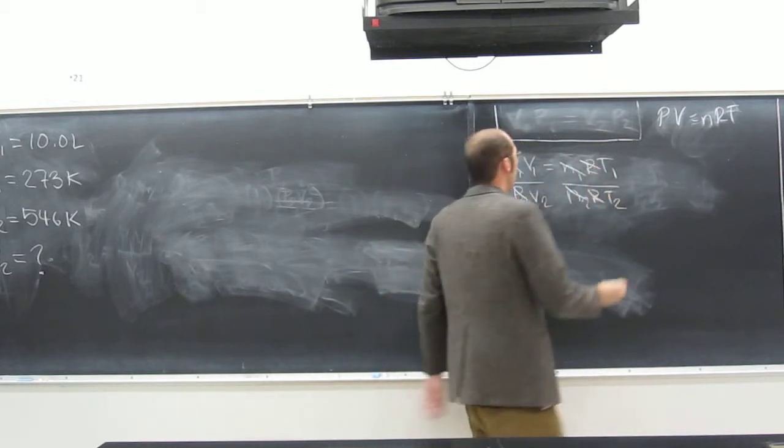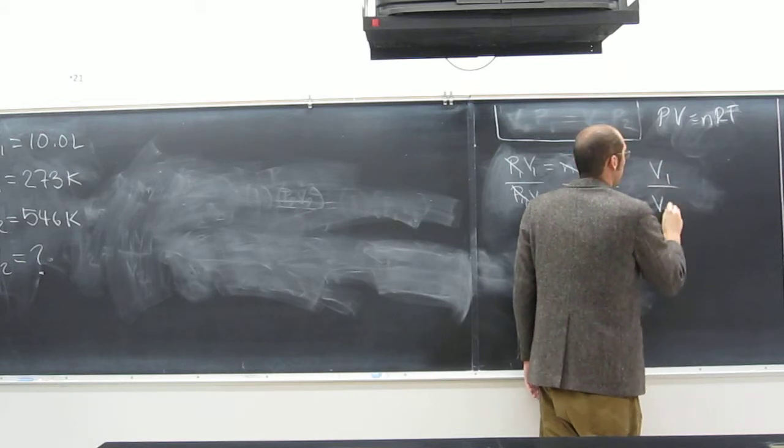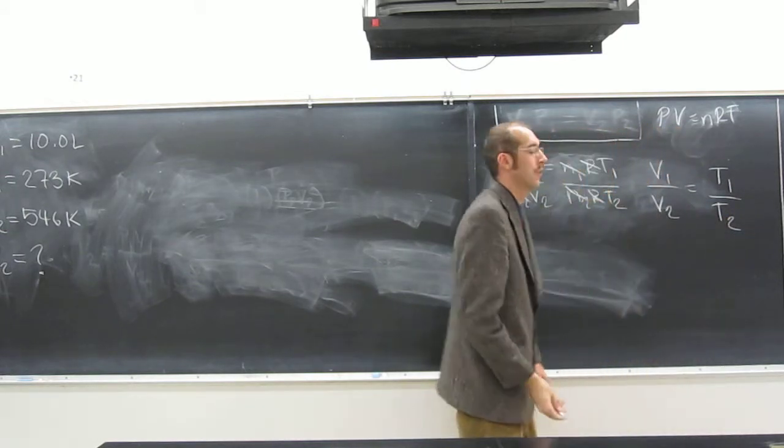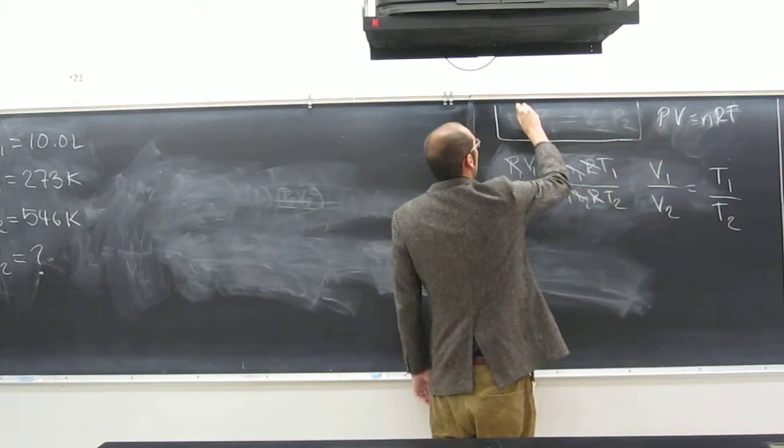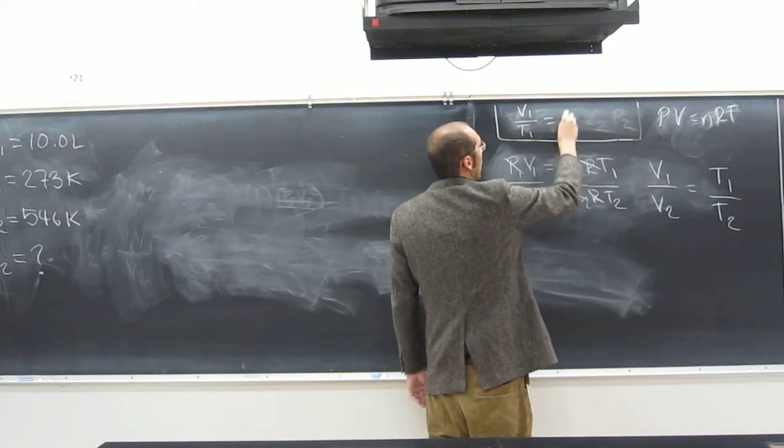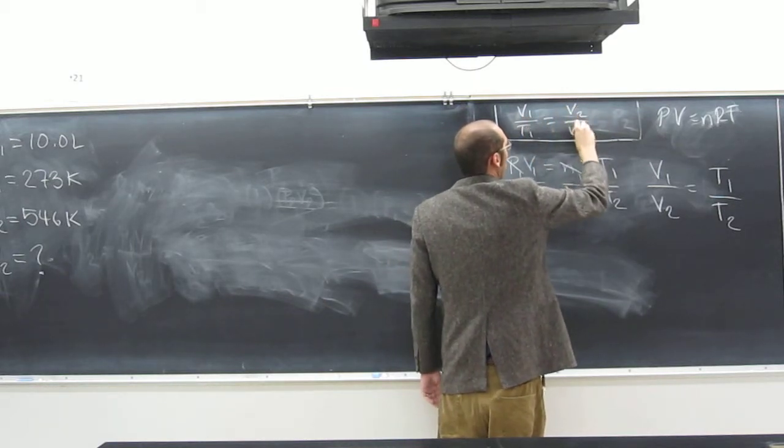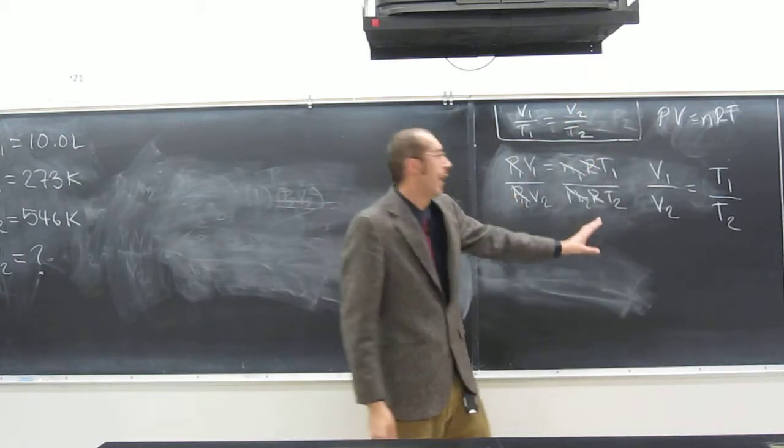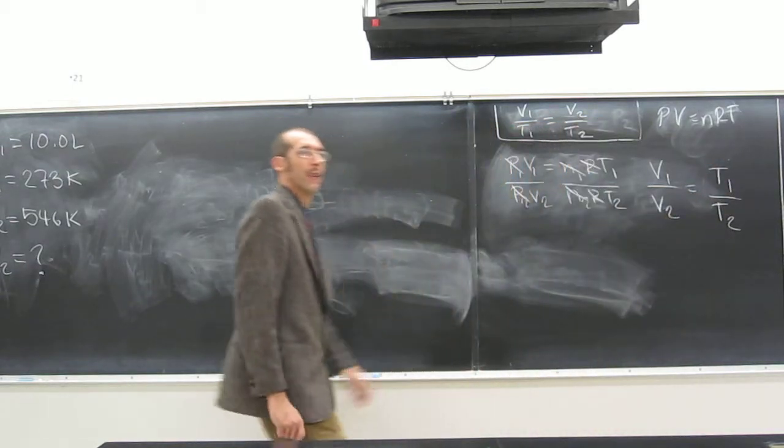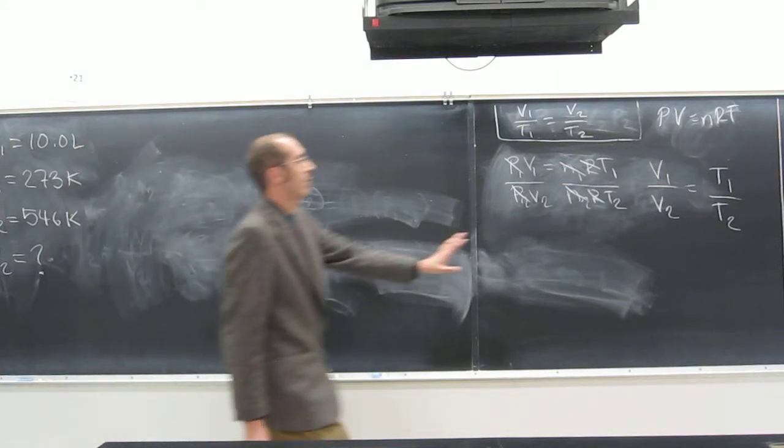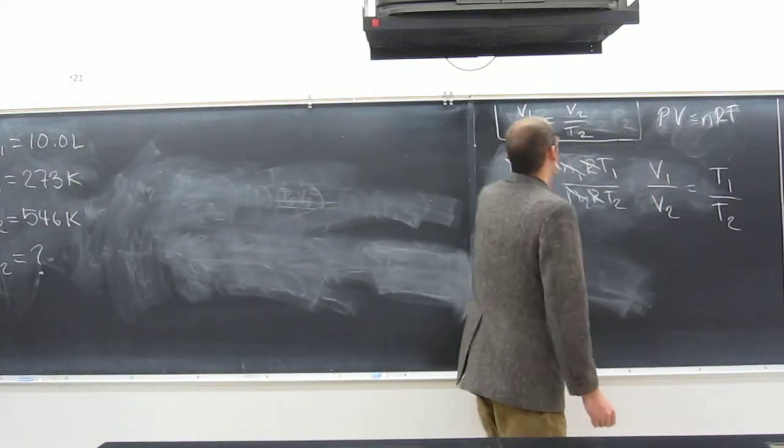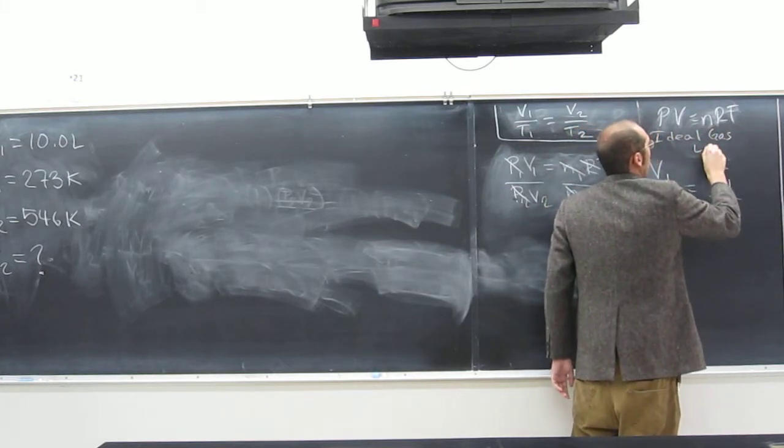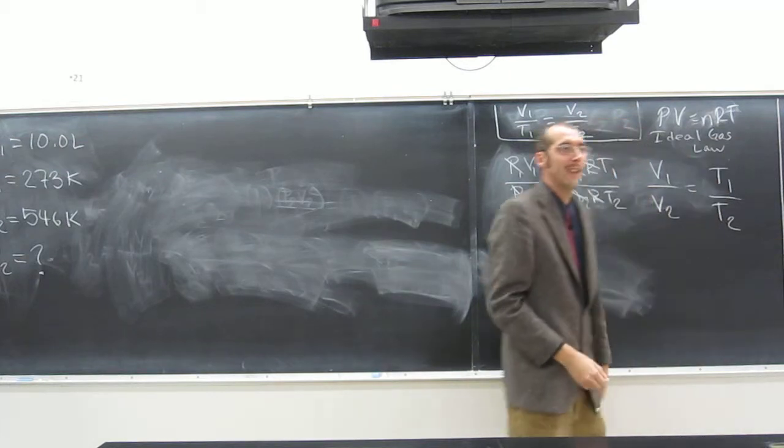So this is another way to write Charles' Law. V1 over V2 equals T1 over T2. But a lot of times you'll see it written, V1 divided by T1 equals V2 divided by T2. So it's the same thing though, right. So let's just use what we got from the ideal gas, this PV equals NRT by the way, it's called the ideal gas law. It's cool because you can get all the other gas laws from it.